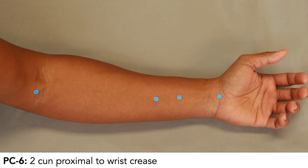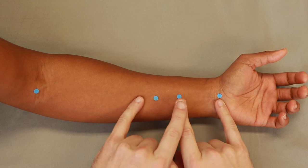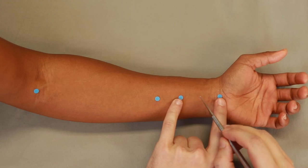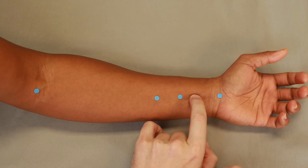Pericardium 6 is 2 cun proximal to the wrist crease. So here's 12 cun, half of 12 is 6. Half is 3. So here's 1, 2, 3. We want 2 cun for pericardium 6.